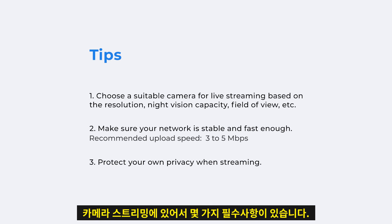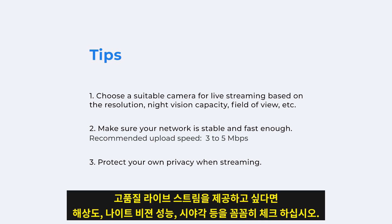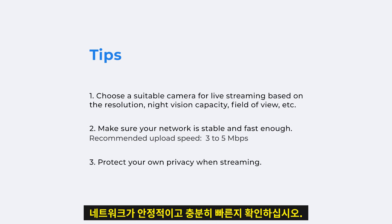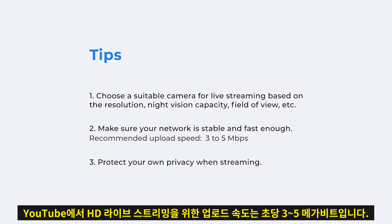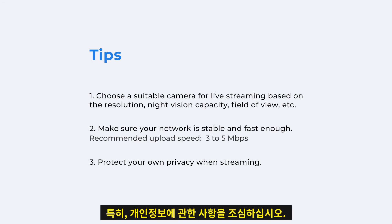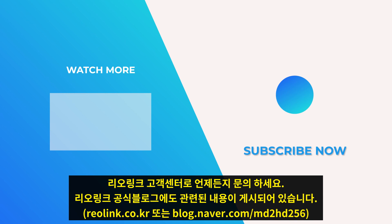Here are some essential tips for streaming your camera. First, choose a suitable camera — its resolution, night vision capacity, field of view, and so on are what to consider for a high-quality live stream. Second, make sure your network is stable and fast enough; the recommended upload speed for HD live streaming on YouTube is 3 to 5 megabits per second. Lastly, protect your privacy when streaming — for example, avoid streaming images that may contain your personal information. Subscribe to the Reolink channel or click another video to keep watching.